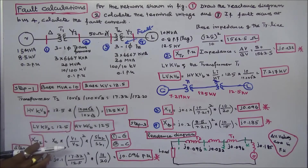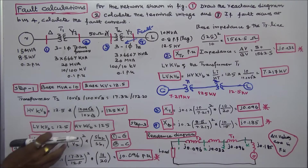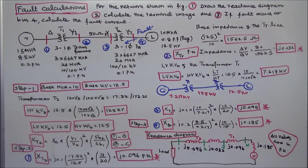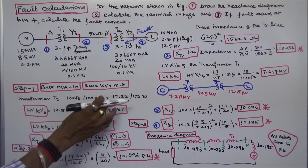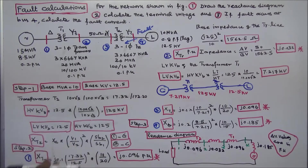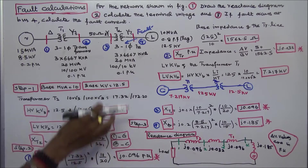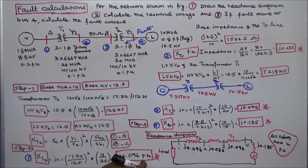The per unit reactance formula is: X_new = X_given × (V1/V2)² × (SB2/SB1), where subscript 1 is the given value and 2 is the chosen value. Therefore, XT2 = j0.1 × (17.32/12.5)² × (10/20), which equals j0.096 per unit.